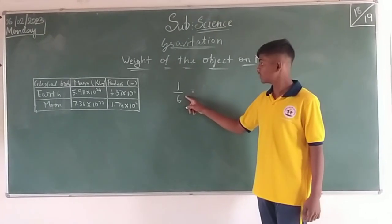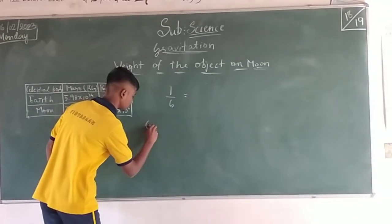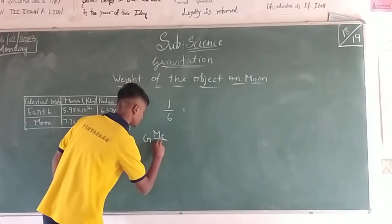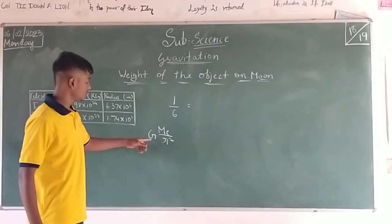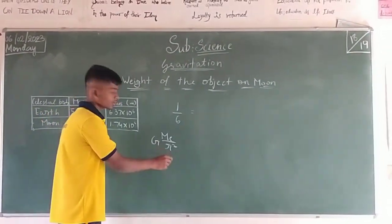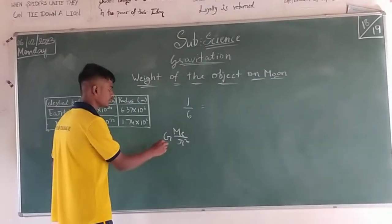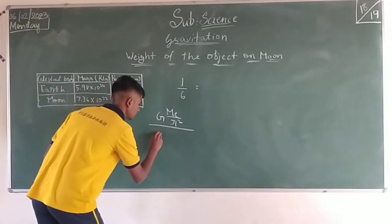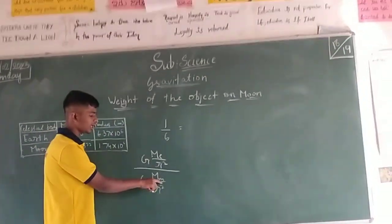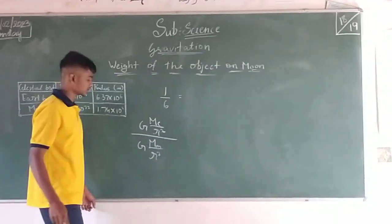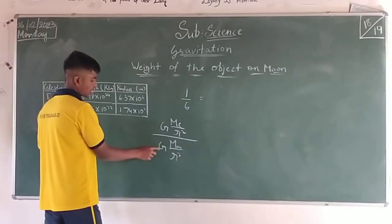Now we will learn the derivation of this formula — how did we get this formula? This is the formula given to find the weight of the object on earth. We will find the difference between the weight of the object on earth and the weight of the object on moon. Here small m refers to moon and small e refers to earth. We will substitute the values by these variables.